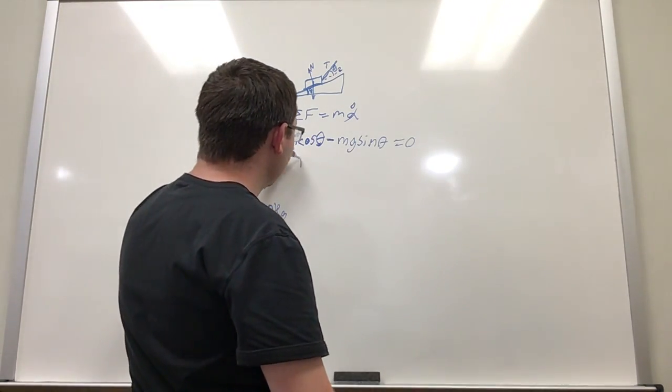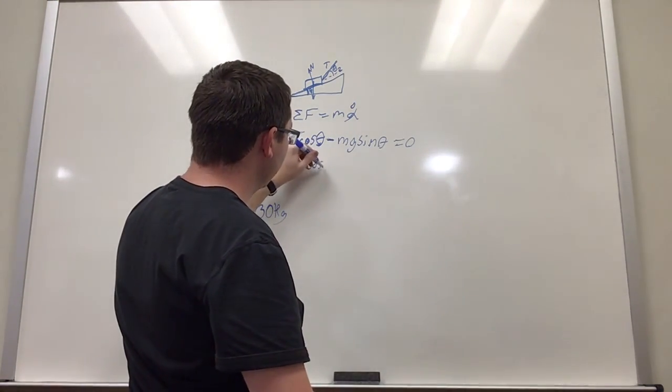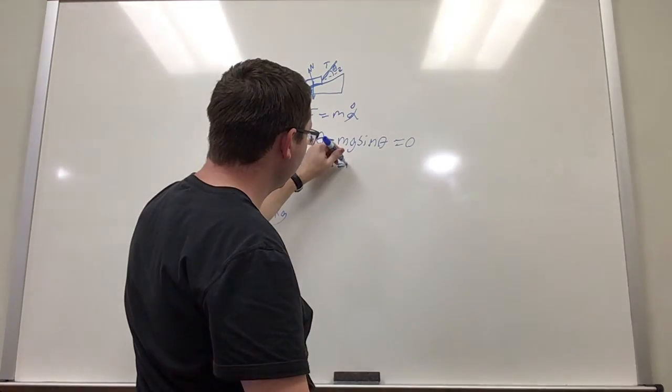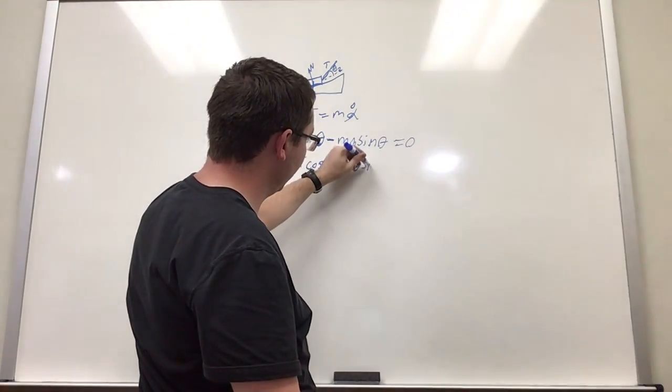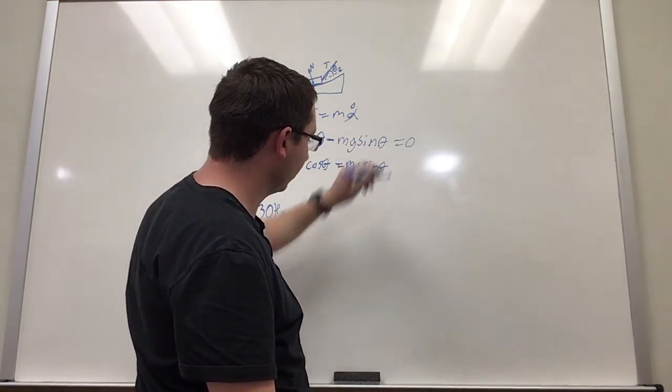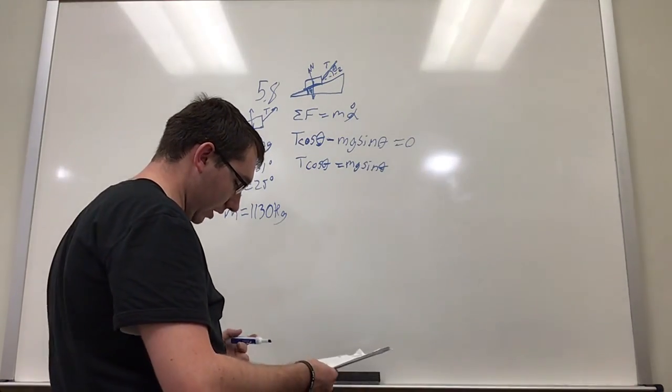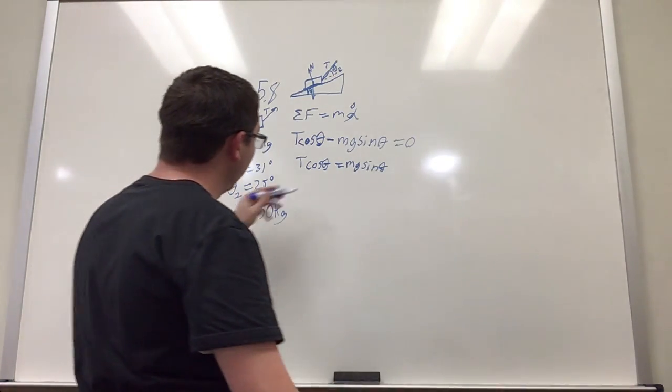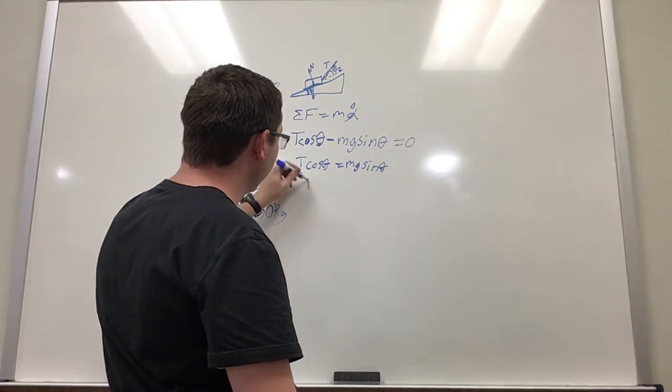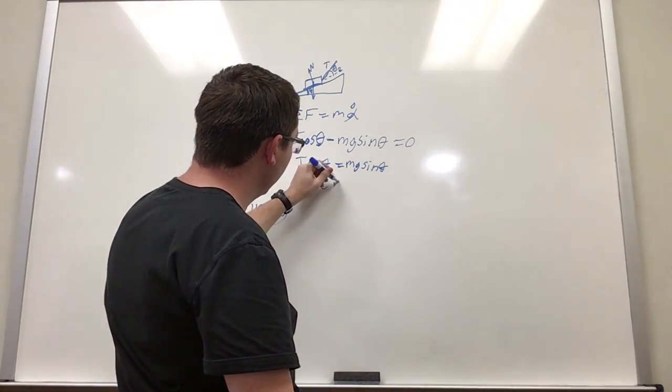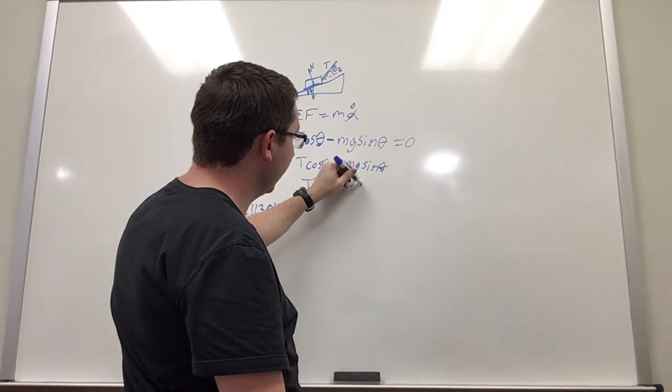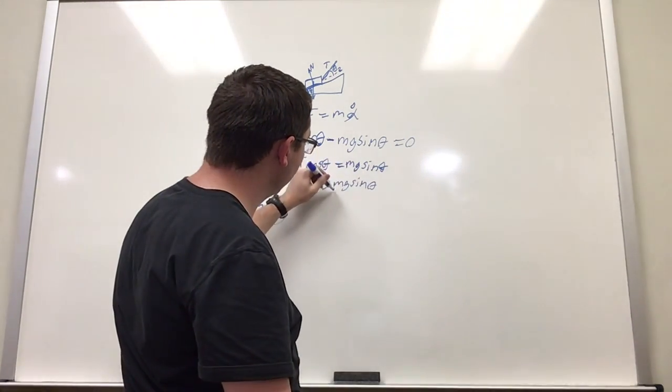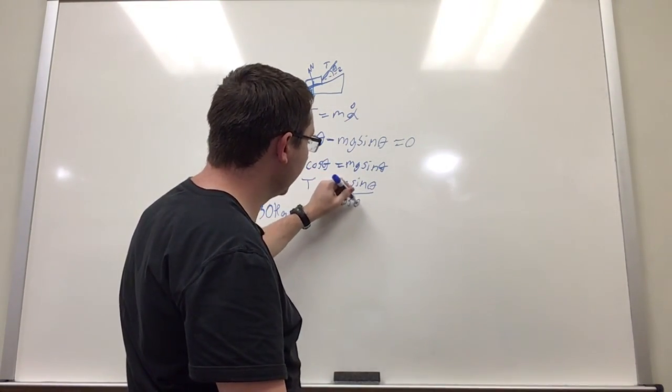So we can say that the tension times cosine is equal to mass times gravity times sine of the angle, because we're trying to solve for the tension. And then we just have to divide, so sine of the angle divided by cosine theta.